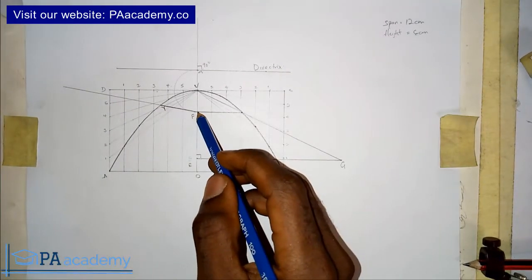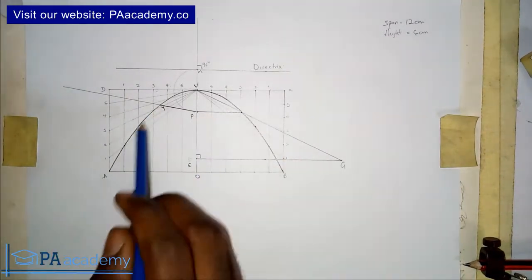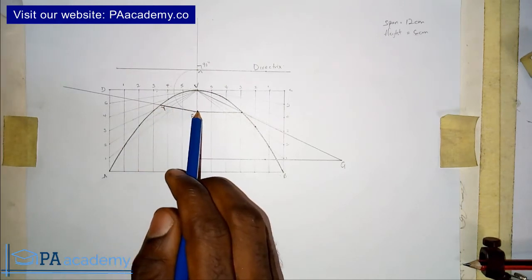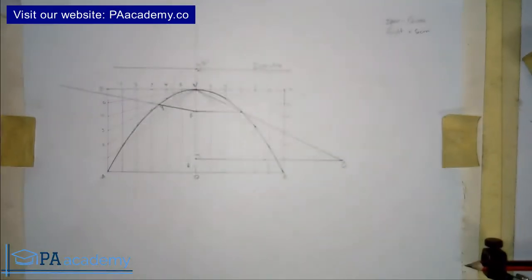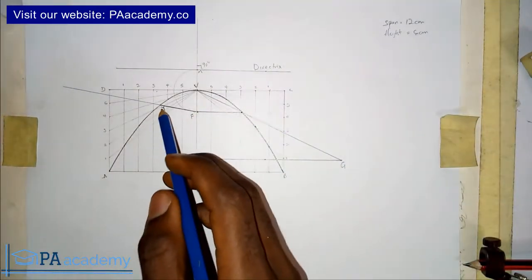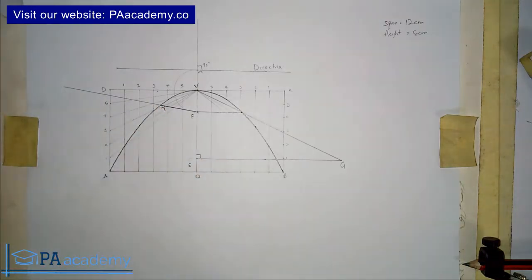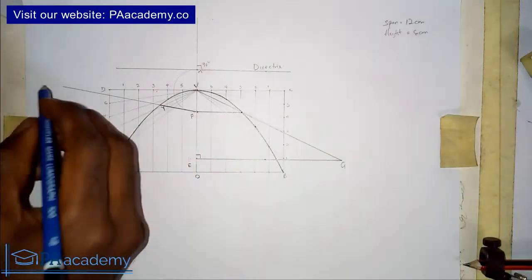But I said we had to first of all find the focus because we have to draw a line from this point where we want our tangent to the focus. So it's important for us to know the focus of the parabola. So now, the next thing you have to do, after drawing the line from the point to F, make sure you extend it out. So let's call this extension outside point Z.